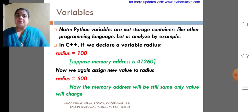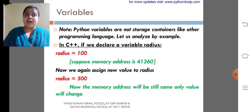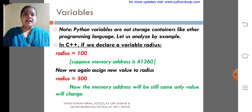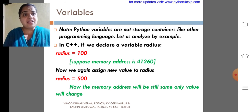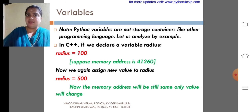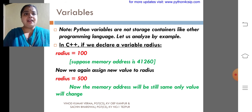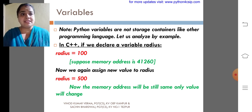Python variables are not storage containers like other programming languages. That is a very important statement. Python variables are not storage containers. That means if we declare a variable radius equal to 100 in C++, suppose the memory address is 41260.